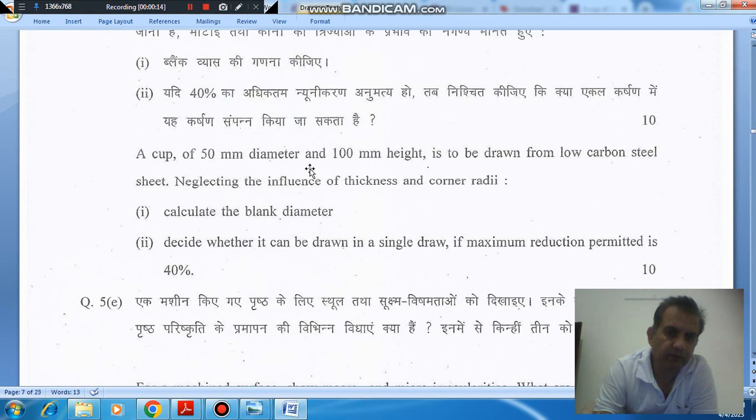A cup of 50 mm diameter and 100 mm height is to be drawn from low carbon steel. Neglecting the influence of thickness and corner radius, calculate the blank diameter to decide whether it can be drawn in a single draw if the maximum reduction permitted is 40%.